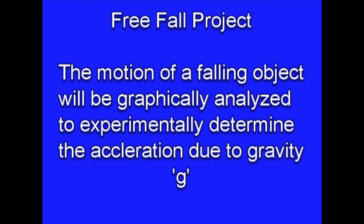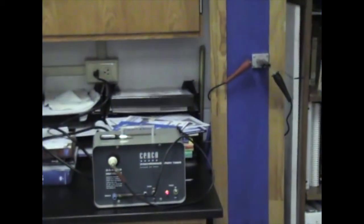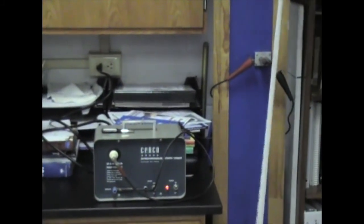The spark timer takes the voltage from the wall, steps it up, and sends out a spark every 60th of a second. When it does that spark, it will burn a hole through a piece of paper and we can measure the distance from the first burn mark to all the others to figure out the acceleration due to gravity.